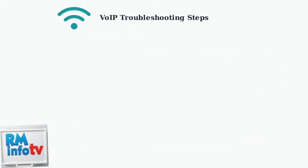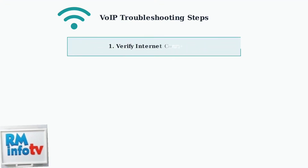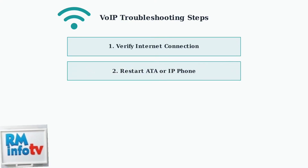VoIP troubleshooting requires a different approach since these systems depend on your internet connection and network configuration. Start by verifying your internet connection is stable and working properly — VoIP cannot function without reliable internet access. Restart your analog telephone adapter or IP phone, as power cycling often resolves temporary connection issues.